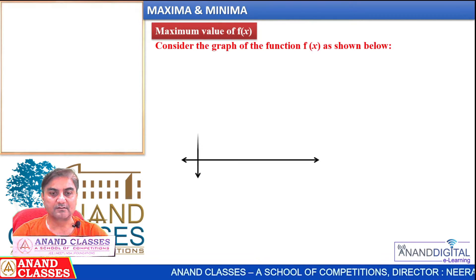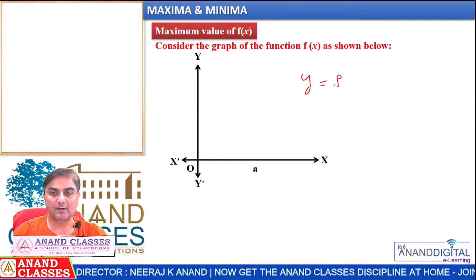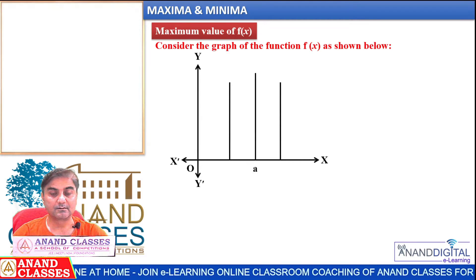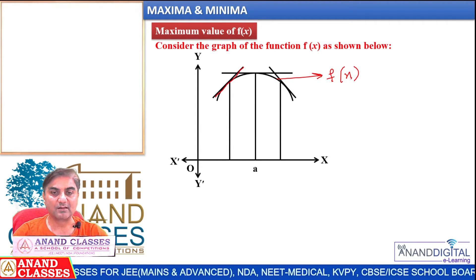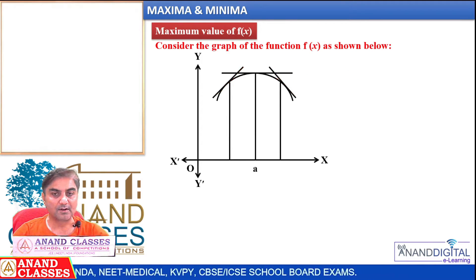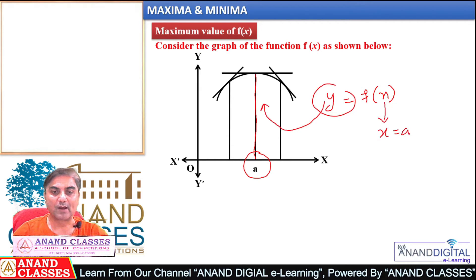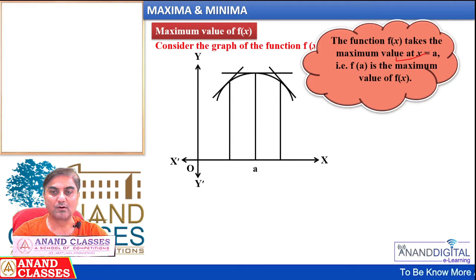Consider the graph of the function f(x) — this is an x versus y graph, y = f(x). At point a, these are the two tangents. This function has maximum value at the point a. When x = a, y is maximum. The function f(x) takes the maximum value at x = a; that is, f(a) is the maximum value of f(x).